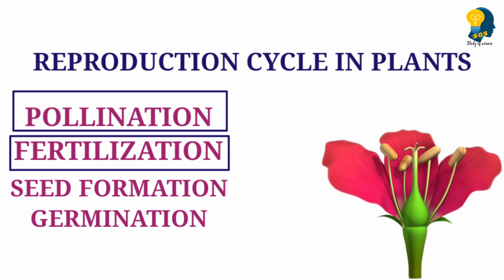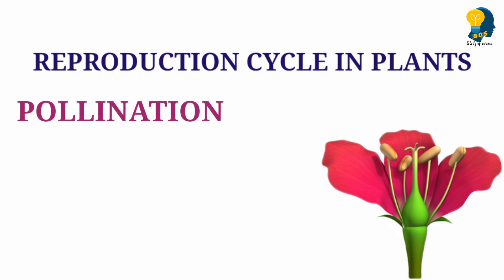Let us begin with the first step, that is pollination. When I say pollination, the word itself contains 'pollen.' You know what pollen is from the previous session — it is the male gamete. Pollen is the male gamete. Where is the male gamete present? It is present in the anther. The pollen grains are present in the anther of the plant.